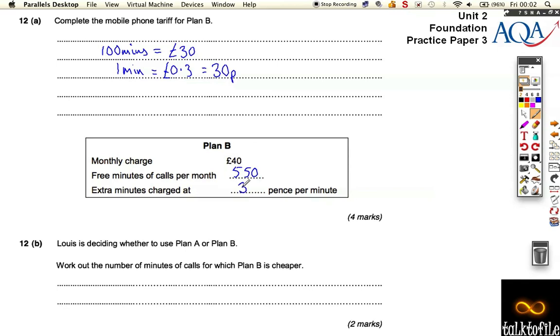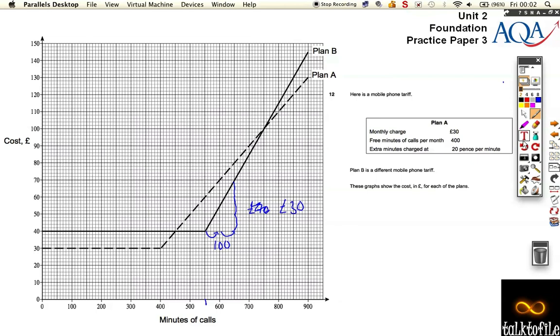So we know that the price is extra 30p. So let's have a look—so that was Plan B. Now it says Louis is deciding whether to use Plan A or Plan B. Work out the number of minutes of calls for which Plan B is cheaper. So if we go back and have a look, well, Plan B is more expensive to start with.